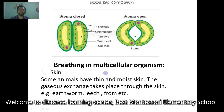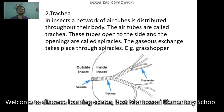How does breathing occur in multicellular organisms? Through which organs? First is skin. Animals like earthworms, leeches, and insects respire through skin. For this, they have thin and moist skin, and the exchange of oxygen and carbon dioxide takes place through the skin.